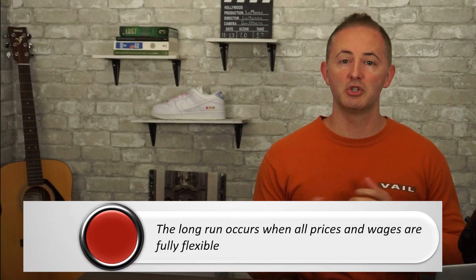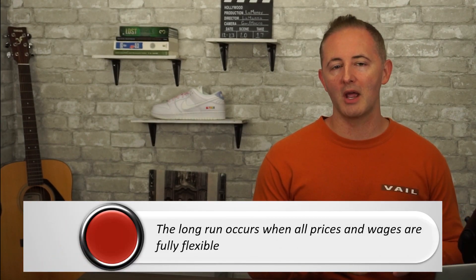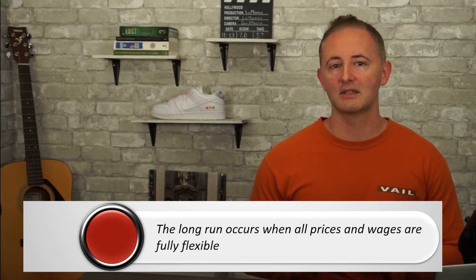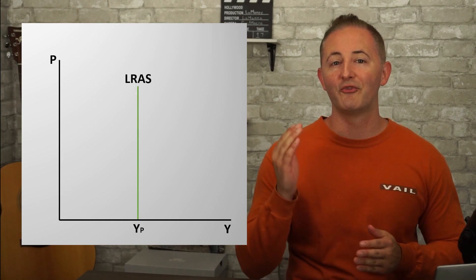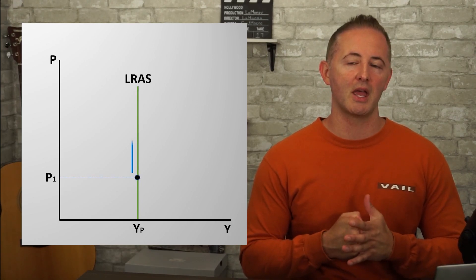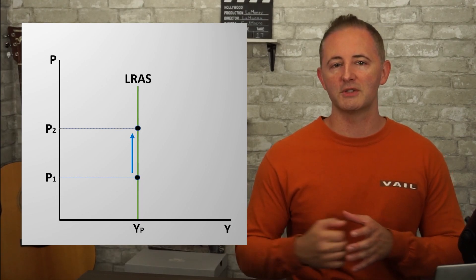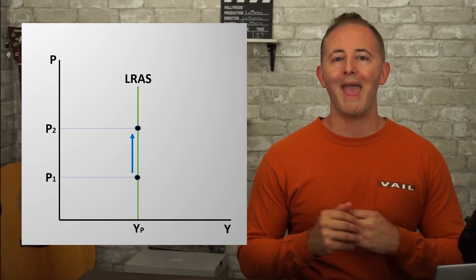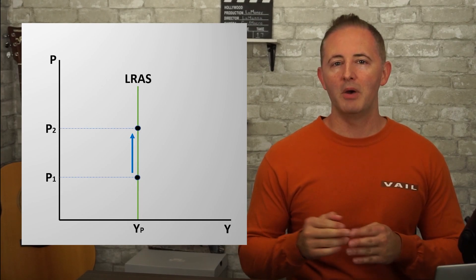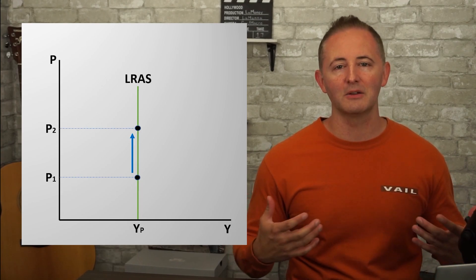So in addition to being when we're all dead, what else can we say about the long run? In macro, the long run is when all prices and wages are fully flexible, as opposed to the short run, in which we take input prices and wages as fixed. Let's take a look at the LRAS curve, and you'll notice that this one is vertically sloping, unlike the upward sloping SRAS curve.